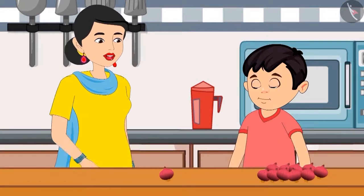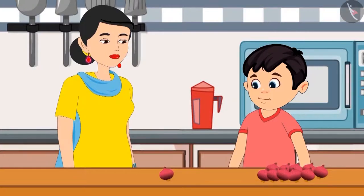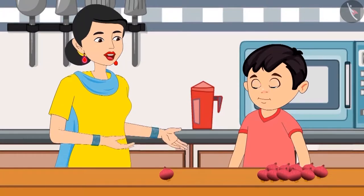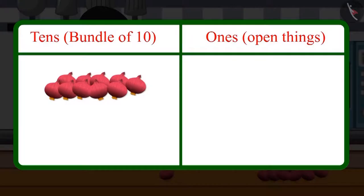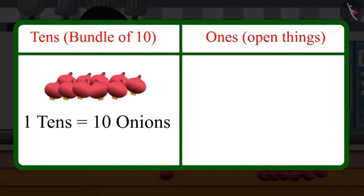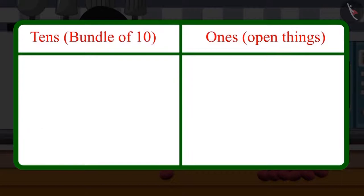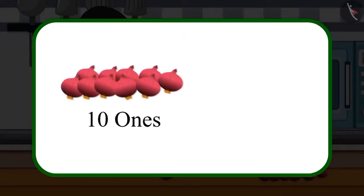Yes, Choto. Do you know how else we can write 11? No mummy, how do we write it? Come on, let me explain it to you. When we make a group of 10 things, then this group is called 10s. And the open things are called 1s. So 10s means a group of 10, and 1s means individual things — the open ones. And when there are 10 ones, then they make 1 ten.